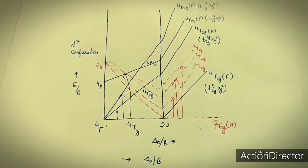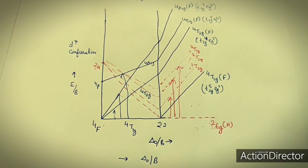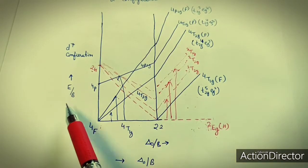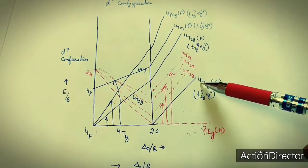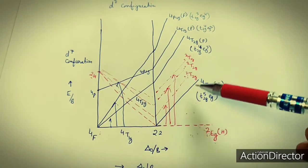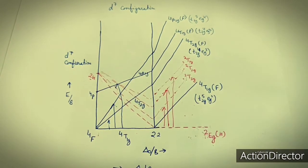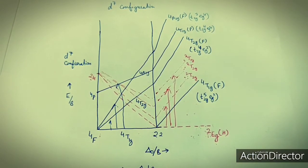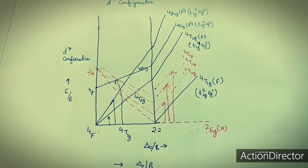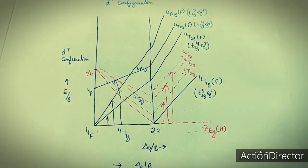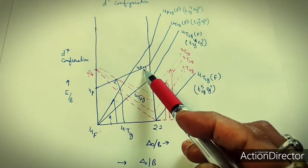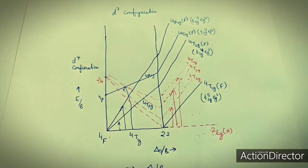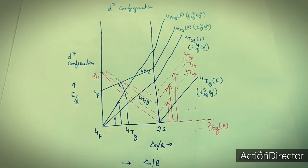This Tanabe-Sugano diagram explains all the characteristic properties. It is a plot between E/B and ΔO/B, containing different multiplicity terms — both doublet and quartet terms. The horizontal line represents the ground state term, and the diagram follows the non-crossing rule. Terms of the same symmetry cannot cross, but A2G and T1G can cross because they have different symmetry.